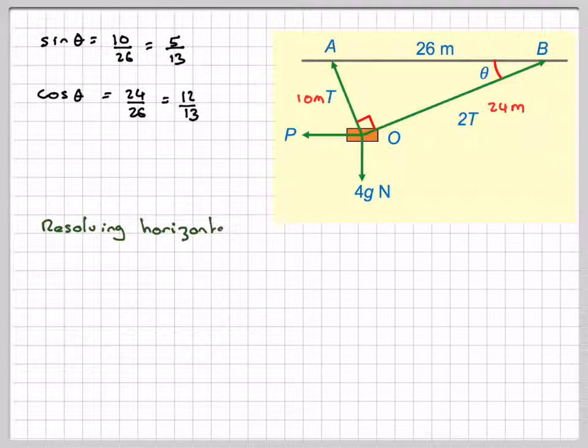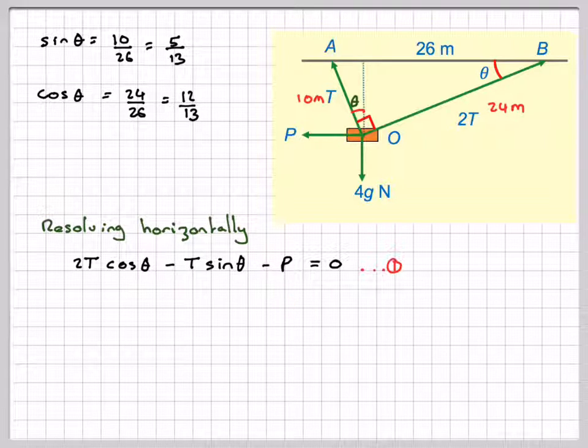We're now ready to resolve horizontally. So resolving horizontally, this force here will be 2T cos θ. And then we have to realize that this angle here is also θ, because this is 90, this would be 90 minus θ, therefore this one will have to be θ. And therefore we're going to say that T sin θ minus P, because P is going in that direction, so we've got one force going that way, two forces going that way. That being positive and that being negative, we'll call that equation 1.